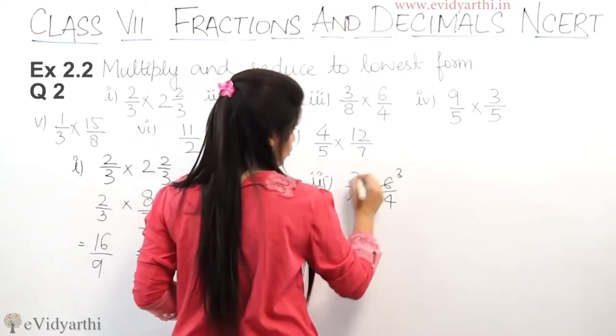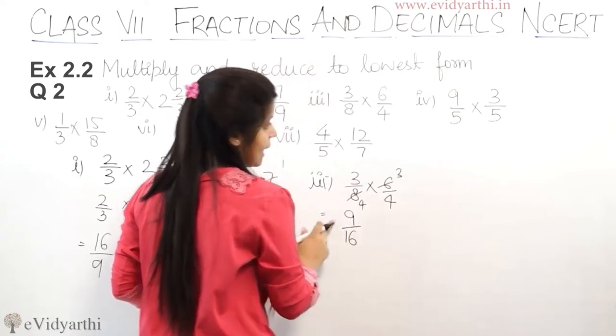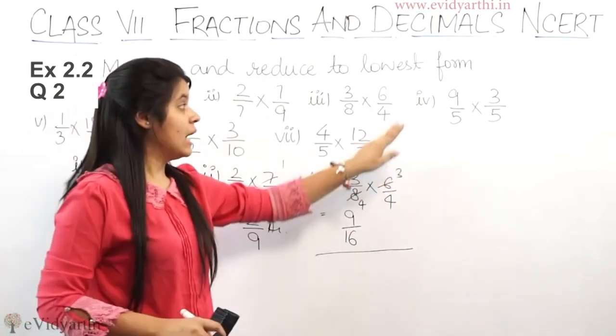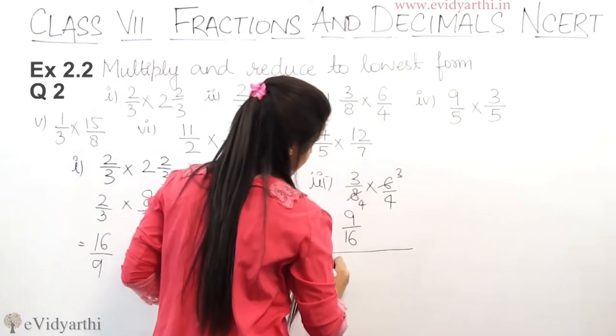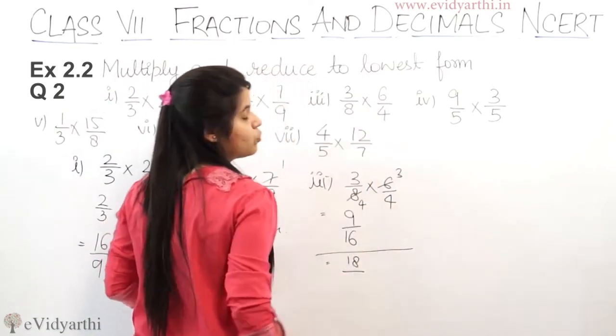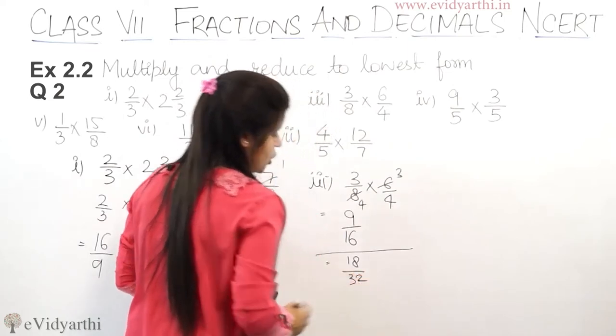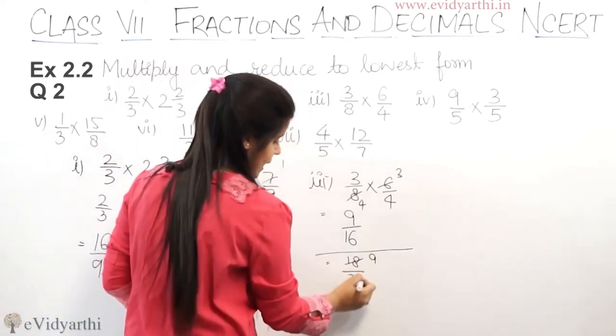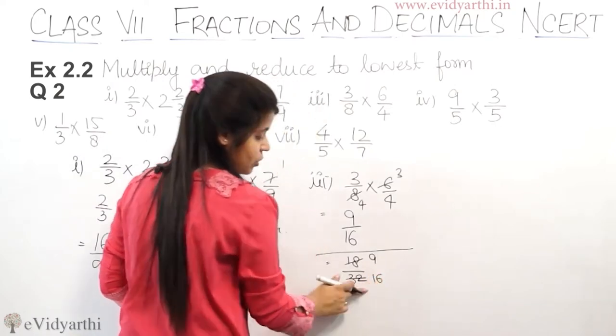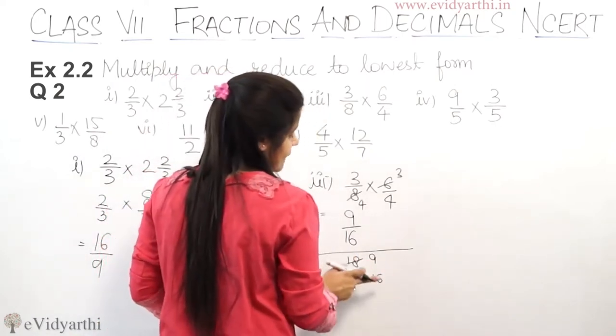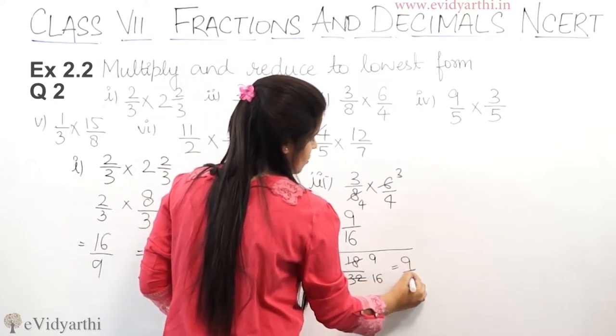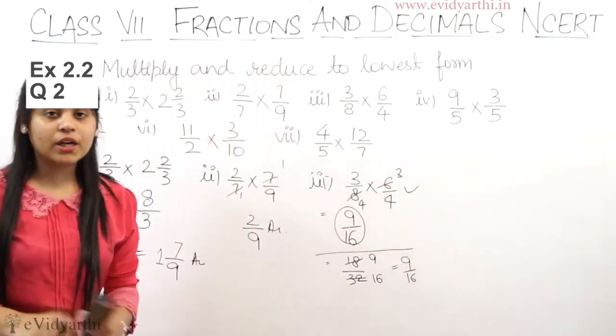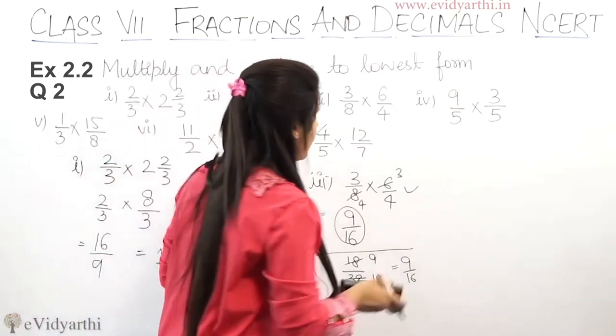So 3 into 3 is 9, 4 into 4 is 16. Now this cannot be reduced. Second method is that I have cut first. If we cut first, 3 into 6 is 18 upon 8 into 4 is 32. So this is 18 and 32, these two are cut. Cut 2, so if we cut this, it will be 9 and this will be 16. So now 9 upon 16.